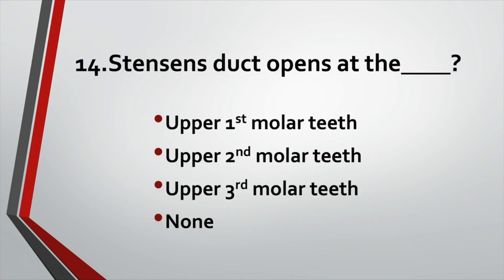Stenson's duct opens at: Option A: Upper first molar teeth. Option B: Upper second molar teeth. Option C: Upper third molar teeth. Option D: None of these. Answer: Option B, Upper second molar teeth.